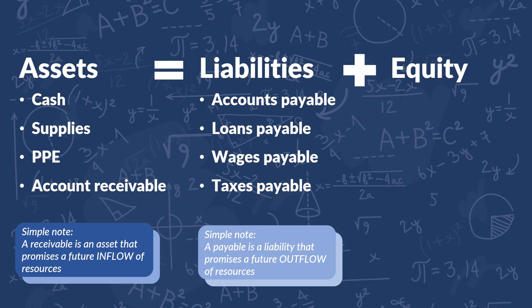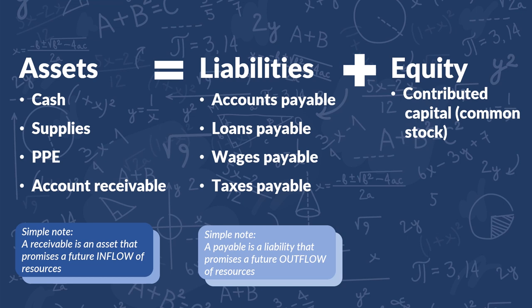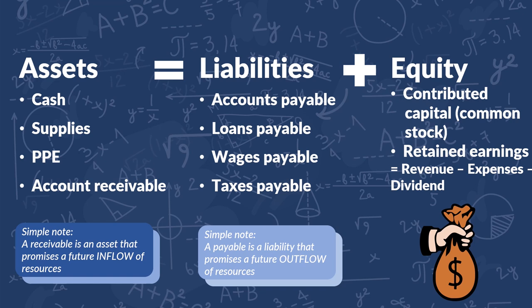Speaking of equity, it's a little bit more complicated because equity can be broken down into another component. The first one we call contributed capital, or common stock. It's going to reflect the inflow of cash or other assets from stockholders in exchange for stock. The last component is retained earnings, which is broken down as revenue minus expenses. I'll talk more deeply about this concept in another video, because in today's video I just want you guys to concentrate on the accounting equation generally.